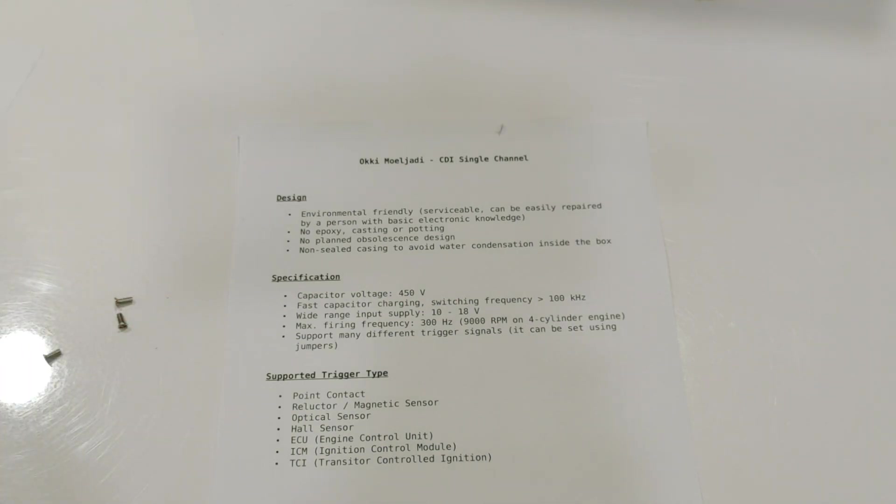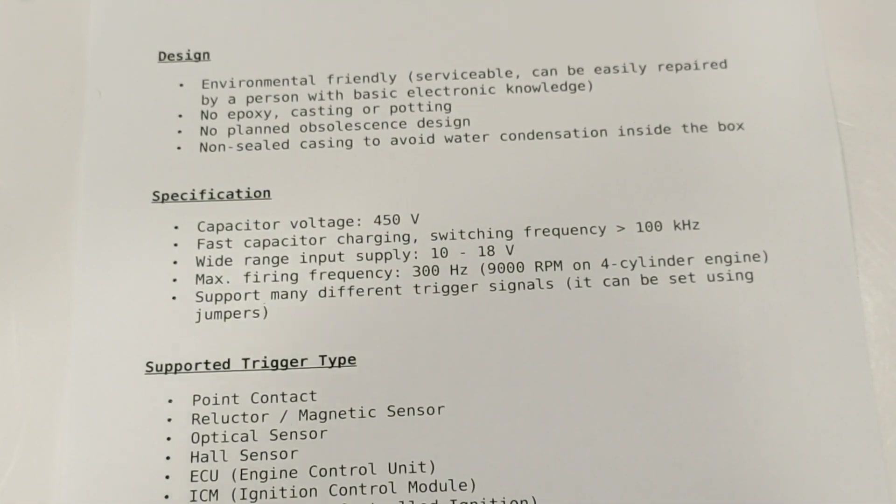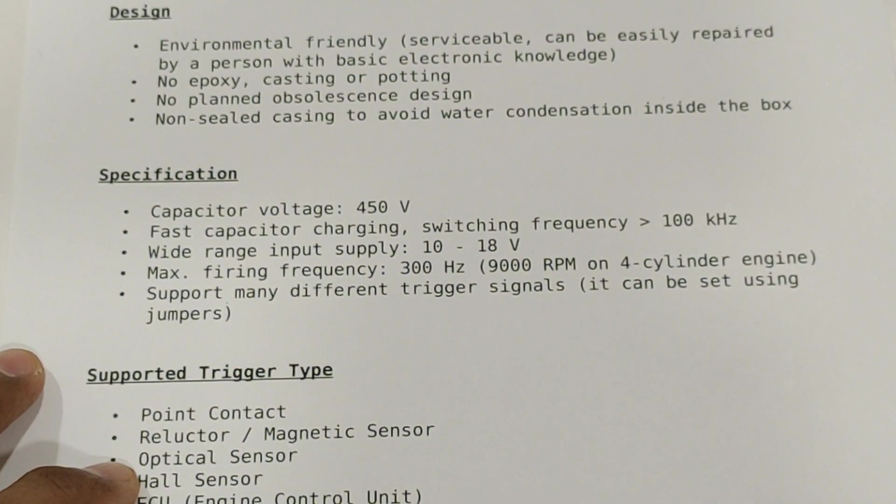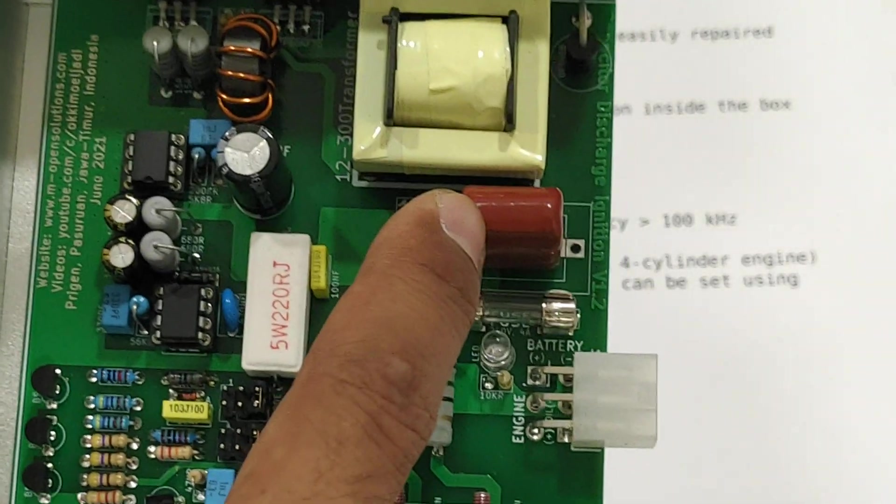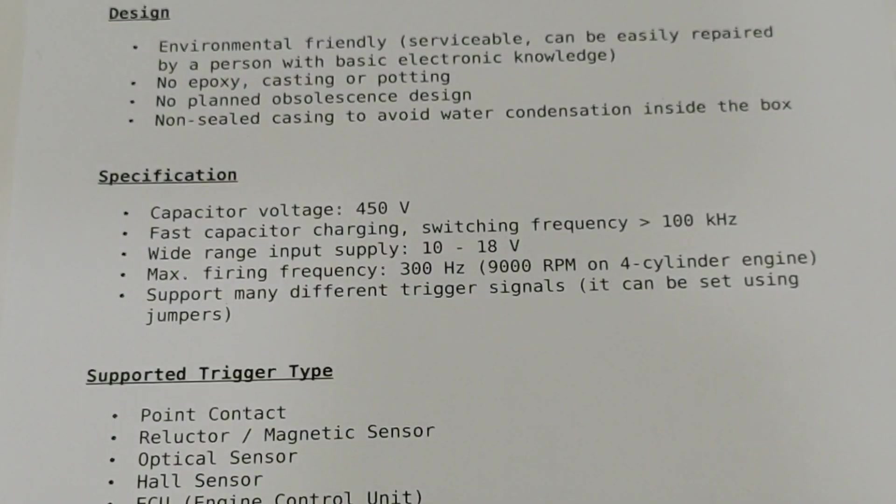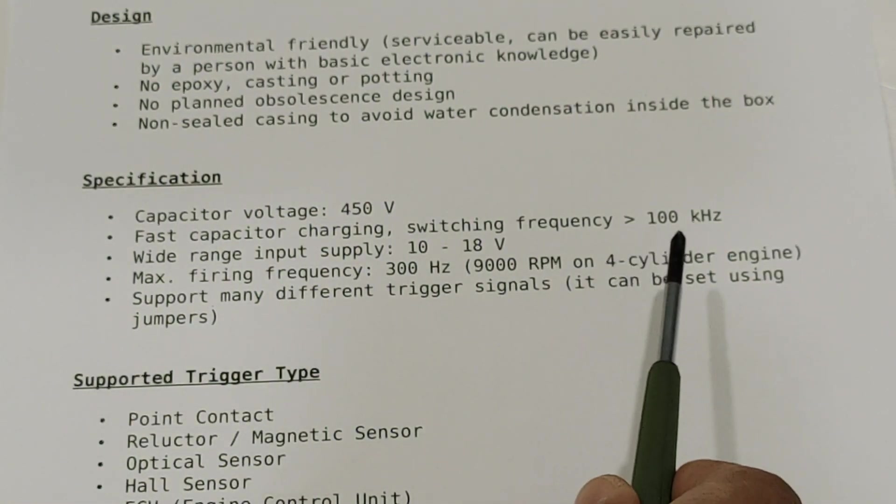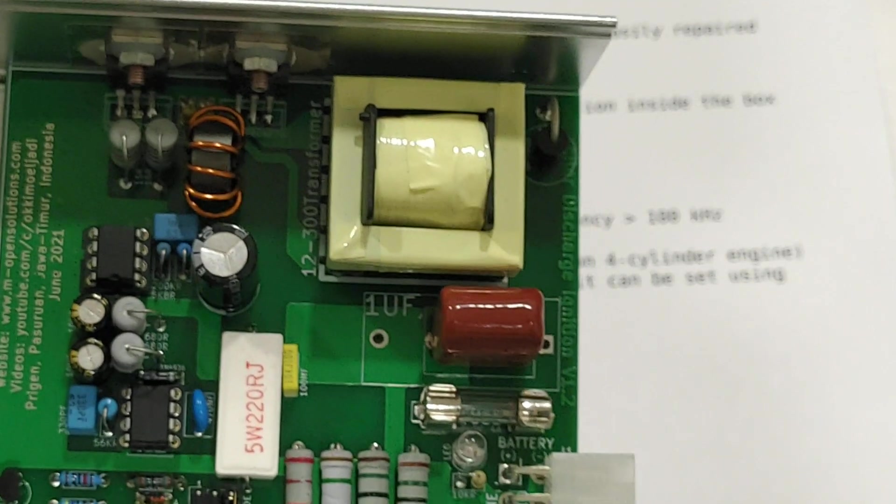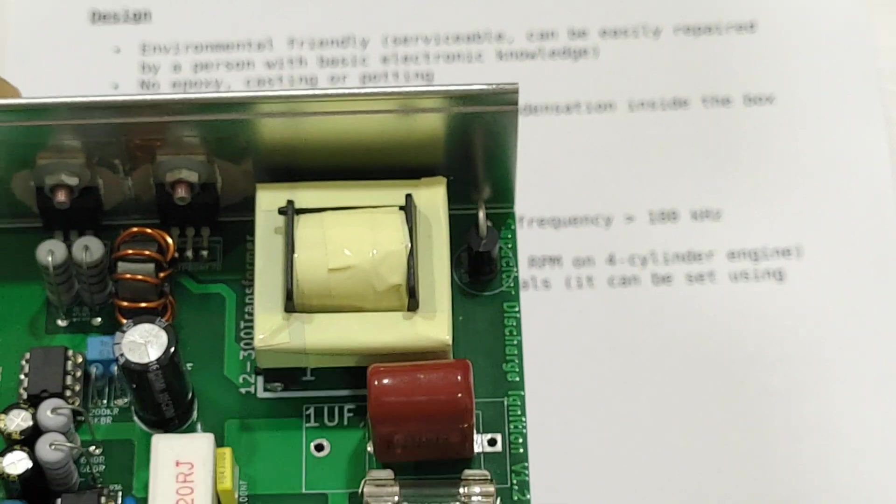Now let's go to the specification. The capacitor voltage is four hundred and fifty volts. This is the capacitor. The charging circuit is high frequency charging circuit. The working frequency is above one hundred kilohertz. This is the transformer, high frequency transformer to charge the capacitor.